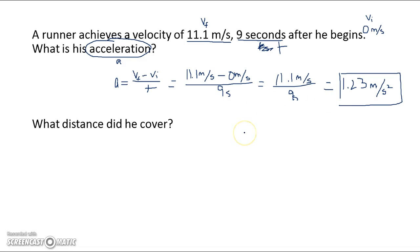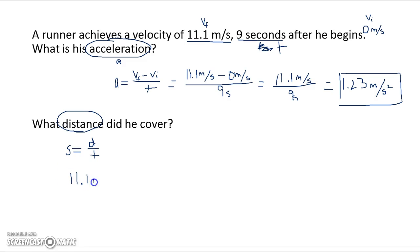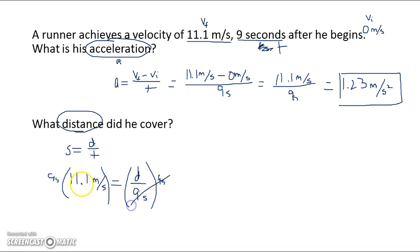The next question ties back with the other stuff: what distance did he cover? We know that speed or velocity is equal to distance over time, and we're looking for distance. We have a speed of 11.1 meters per second, and we have a time of 9 seconds. So we've got to get d by itself — we're going to multiply both sides by 9 seconds. Seconds cancel, and so 9 times 11.1 — the distance is going to be equal to 99.9 meters. And that's your distance.